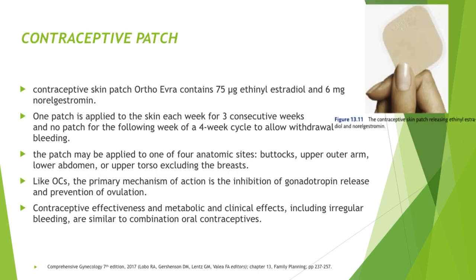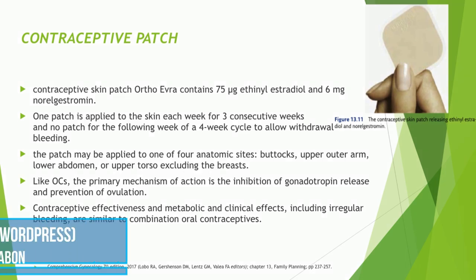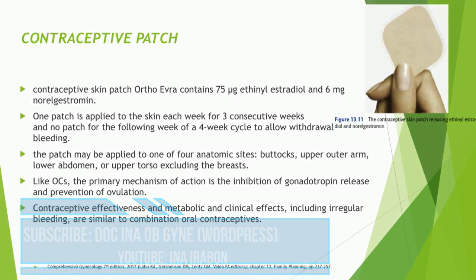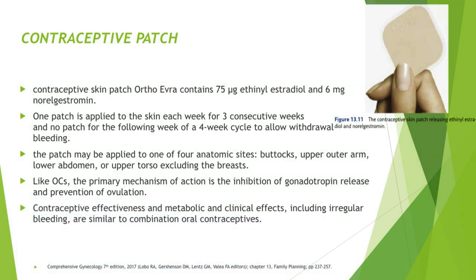The contraceptive skin patch, also called OrthoEvra, is another Tier 2 method. It contains 75 micrograms of ethinyl estradiol and 6 mg of norelgestromin. One patch is applied to the skin each week for 3 consecutive weeks, with no patch for the following week of a 4-week cycle to allow withdrawal bleeding. The patch may be applied to one of four anatomic sites: the buttocks, upper outer arm, lower abdomen, or upper torso, excluding the breast. Like OCs, the primary mechanism of action is inhibition of gonadotropin release and prevention of ovulation, and contraceptive effectiveness and clinical effects are similar to combination oral contraceptives.